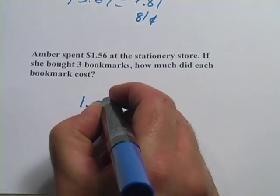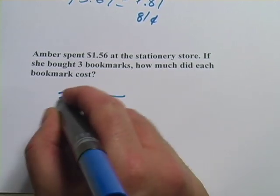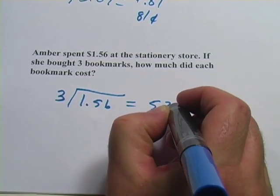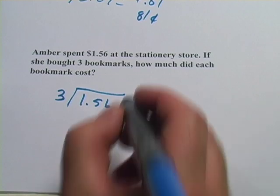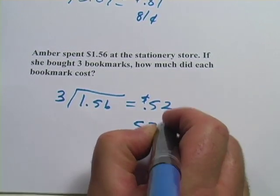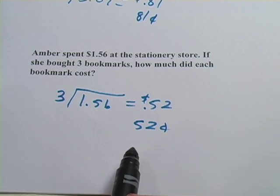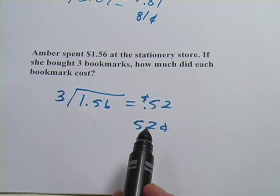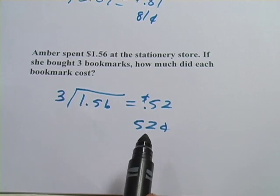So we take $1.56, and we divide it by three. And we get 52, or .52 actually, or 52 cents. So each bookmark costs 52 cents. And those are some problems about equal groups. You're always going to use either multiplication or division to solve those.